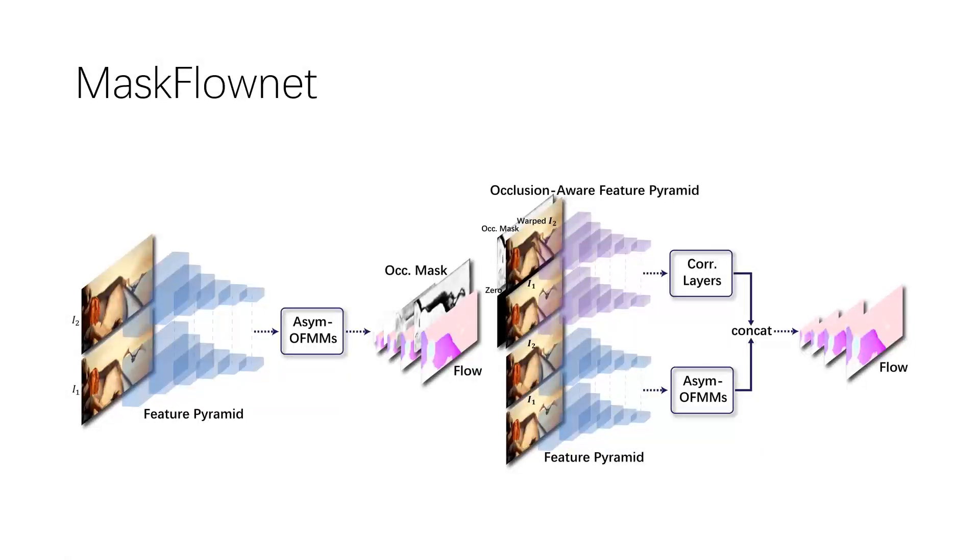In the second stage, the learned occlusion mask is concatenated with the warped image and fed into the occlusion-aware feature pyramid, which, together with the original plain feature pyramid, forms the dual-pyramid structure.